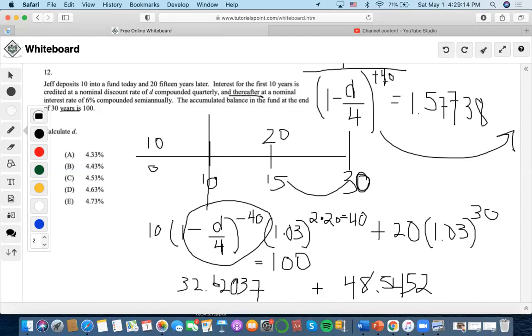Then we get rid of the exponent by taking the 40th root. We move the 1 to the other side and subtract 1 to get negative 0.00103, then divide by negative 1.